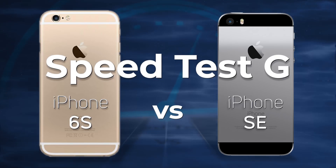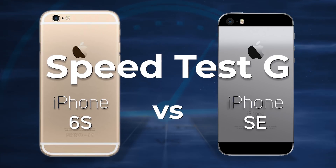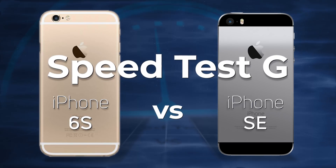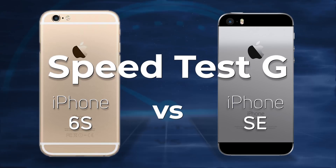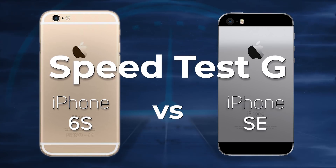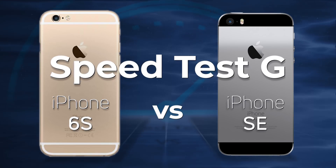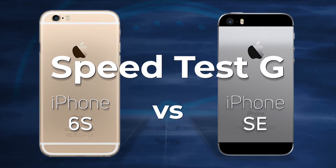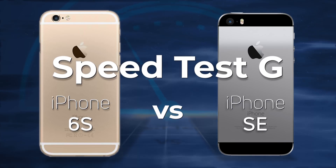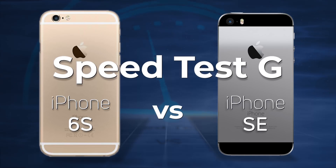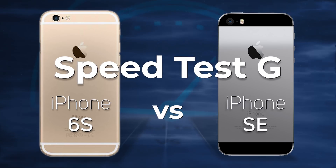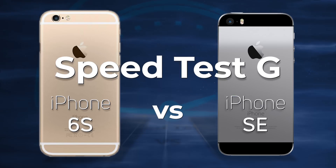Apple announced the iPhone 6s in the latter part of 2015 with the Apple A9 processor, then six months later it announced the iPhone SE — the iPhone special edition — also with the Apple A9 processor. So if you put them side by side, which one actually has greater performance?